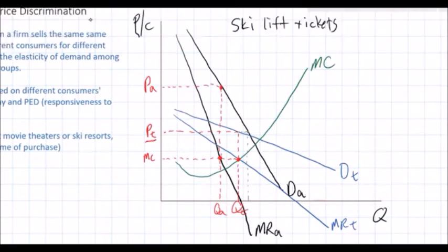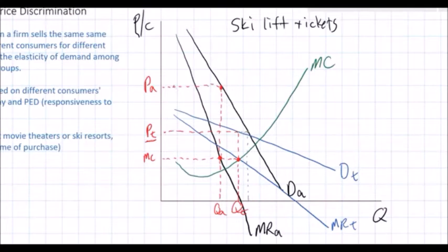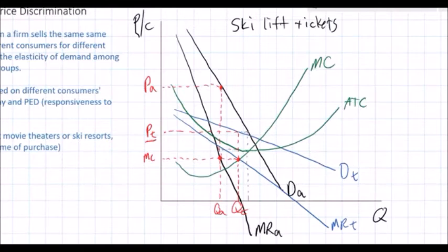Now let's show the total profits the ski resort would have earned if it had only charged a single price of PT and compare that to the profits earned by charging two prices PA and PT. I need to add an average total cost curve to determine the level of economic profit. With the ATC curve, I can identify the firm's ATC at a quantity of QT and shade the area of economic profit if the ski resort had only charged a single price.